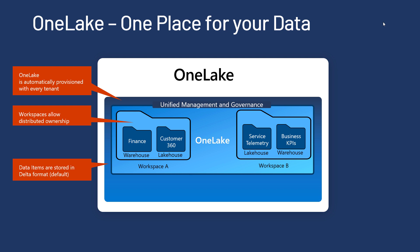Every workload stores its data in one lake using delta format. A pipeline bringing data into one lake stores output as a delta table. A data lakehouse stores all data in delta format. A data warehouse in Fabric stores data in delta format. Even Power BI models in Microsoft Fabric use delta format as the data storage. No data duplication — because every workload understands, writes, and reads delta format.